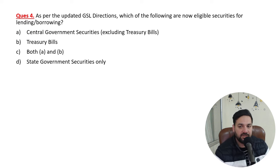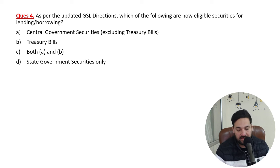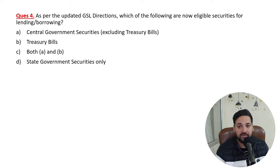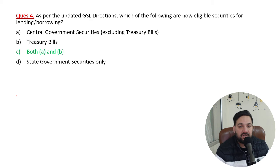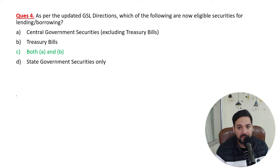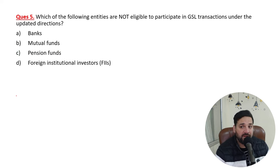As per the latest Government Securities Lending (GSL) directions, the following are now eligible securities for lending and borrowing. Treasury bills are the recent additions — both options A and B are eligible securities under GSL. Treasury bills have recently been added to the eligible securities list.